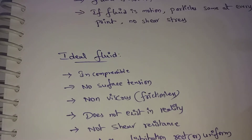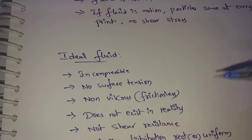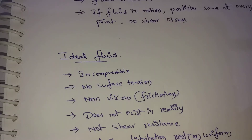Next, Ideal Fluid has No Surface Tension. Ideal Fluid is Non-Viscous, meaning it is frictionless. Ideal Fluid does not exist in reality. In reality, every fluid has viscosity, surface tension, and compressibility. So Ideal Fluid is just an assumption.